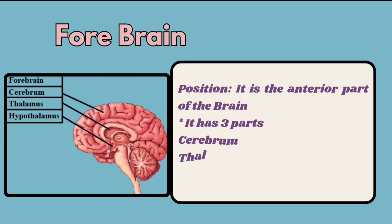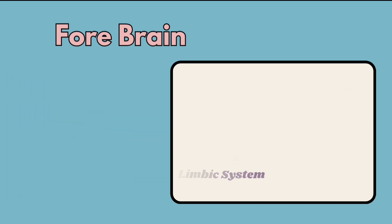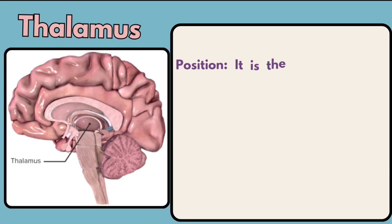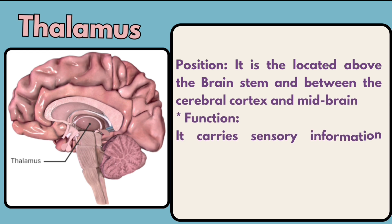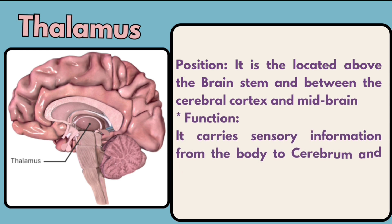Forebrain: its position is the anterior part of the brain. It has three parts: the cerebrum, thalamus, and the limbic system. The forebrain is also called the most recently developed portion of our brain. The first part is the thalamus, which is located above the brainstem and between the cerebral cortex and the midbrain. Its function is to carry sensory information from the body to the cerebrum and limbic system.